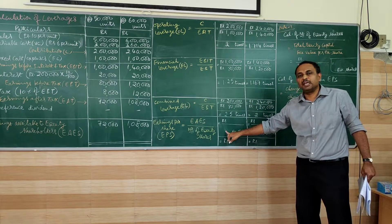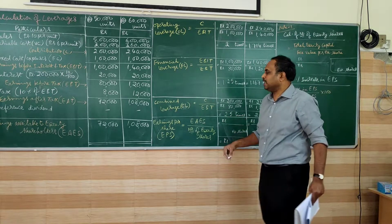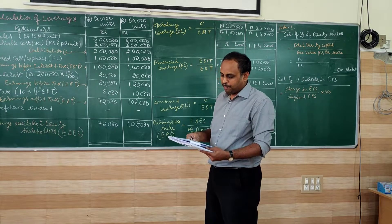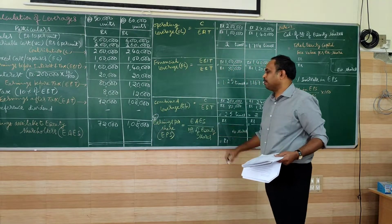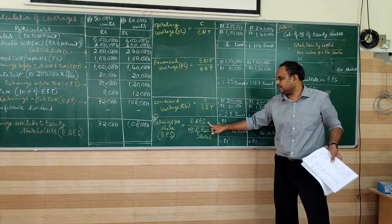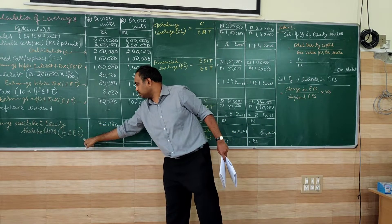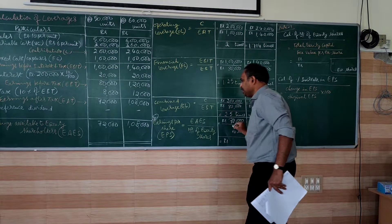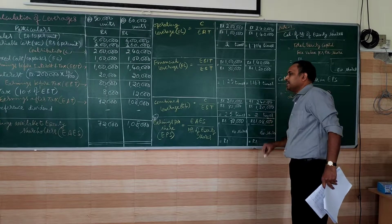The next calculation is EPS, earnings per share. This is a new one. They are giving us in the problem as part B. This is part B, I am calculating here earnings per share. For this, we take EAPS, that is earnings available to equity shareholders, which we have: 72,000 for first situation, 1 lakh 8,000 for second situation.